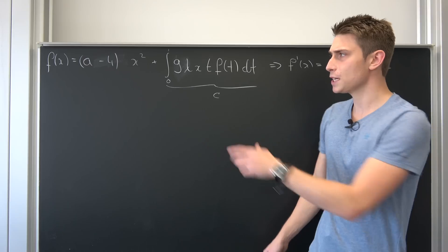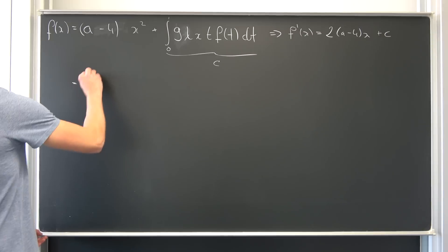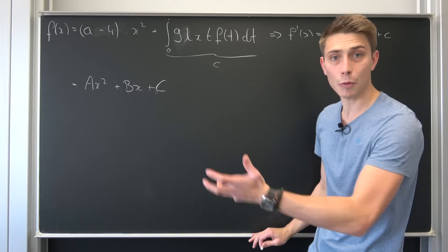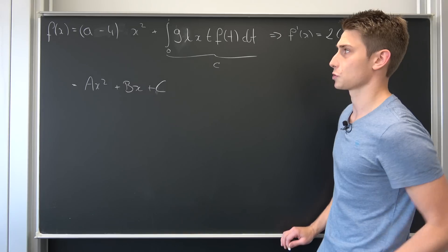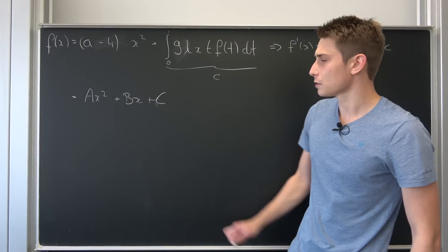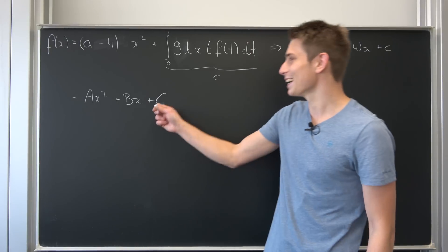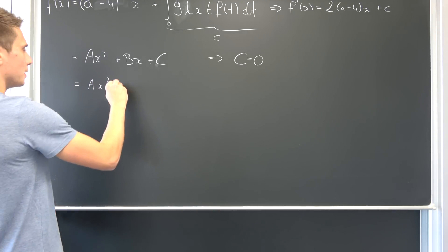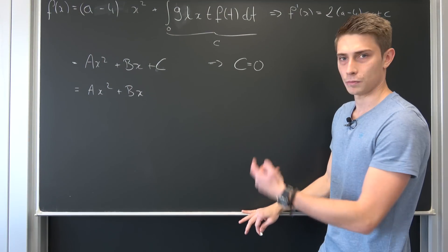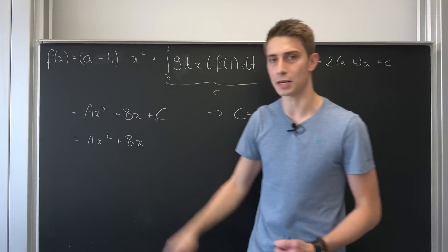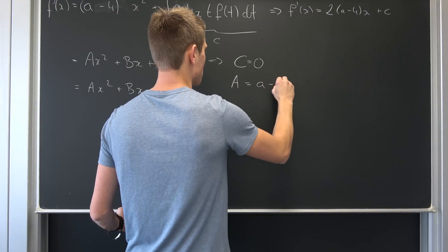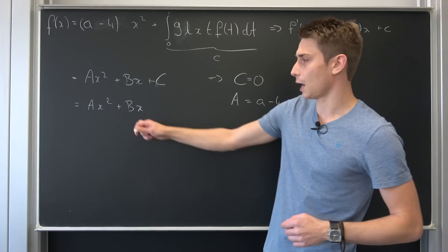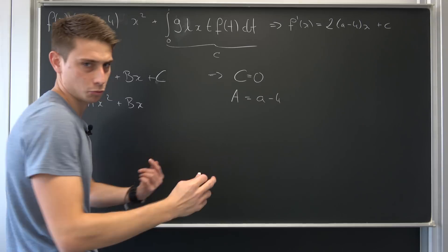This is of the form of a polynomial of the first degree, so f is in fact a polynomial of the second degree. That means we can rewrite f as ax squared plus bx plus capital C. Now we can compare coefficients. You can easily see that the capital C is missing up here, so our C is in fact 0. So we end up with ax squared plus bx.